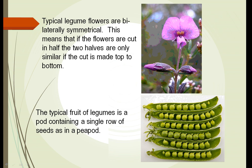Here we're looking at a typical legume flower and as I said they're bilaterally symmetrical. That means that if you cut them in half one way or the other, the halves are going to mirror each other only in one direction. So notice if you cut this flower top to bottom, this half mirrors this half. But if we cut it in half sideways, this bottom half has no mirror image at the top. That's what we mean by bilaterally symmetrical. Orchid flowers are similar.